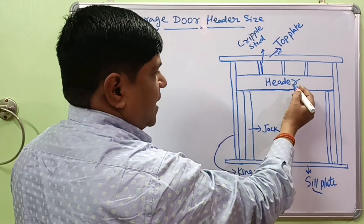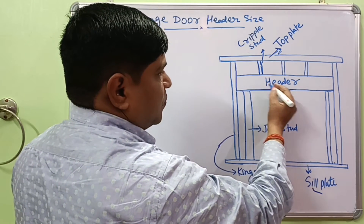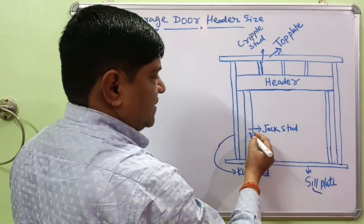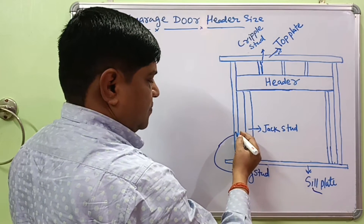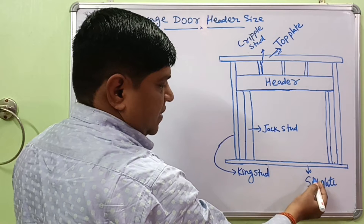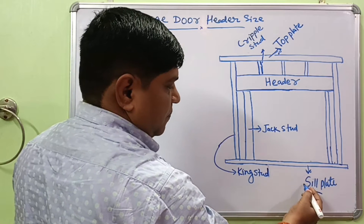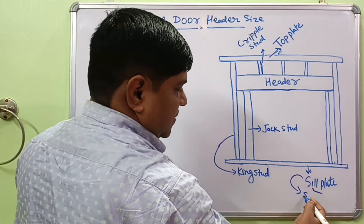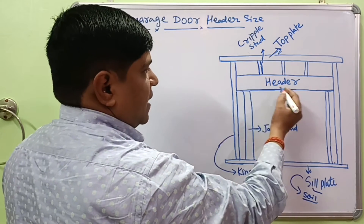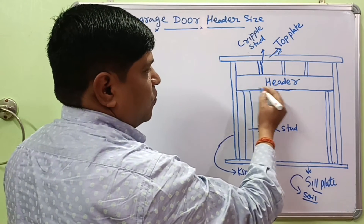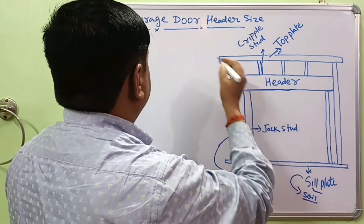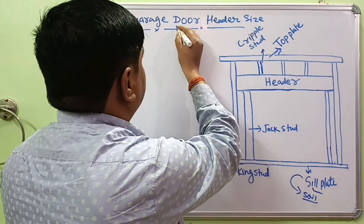This header acts as a simply supported beam that transfers the load to the adjacent jack stud, and the jack stud transfers the load to the king stud. The king stud finally transfers the load to the seal plate, and then finally transfers the load to the soil. This means the header is placed over the opening — either a window or a door, but here it is the garage door.